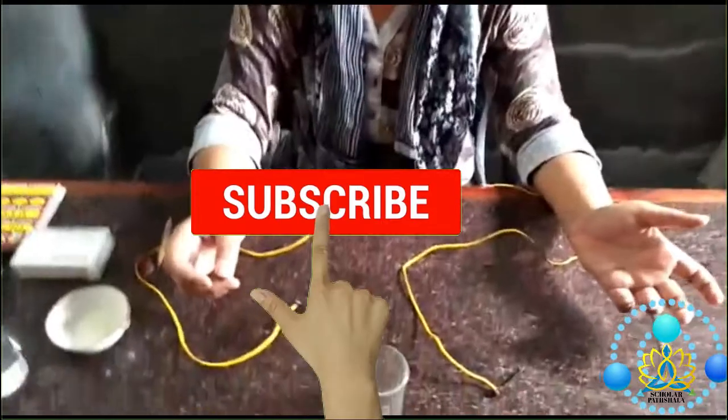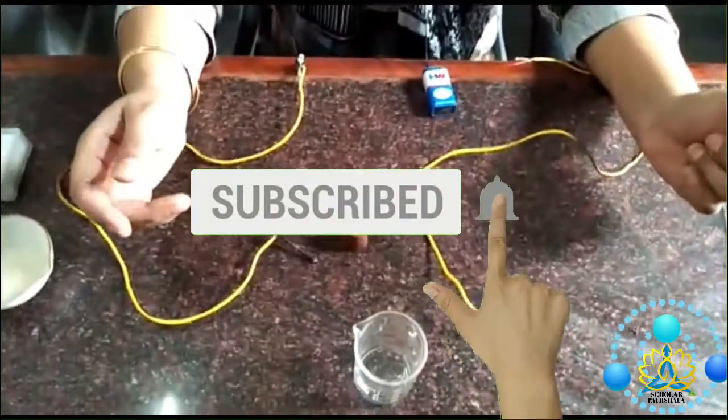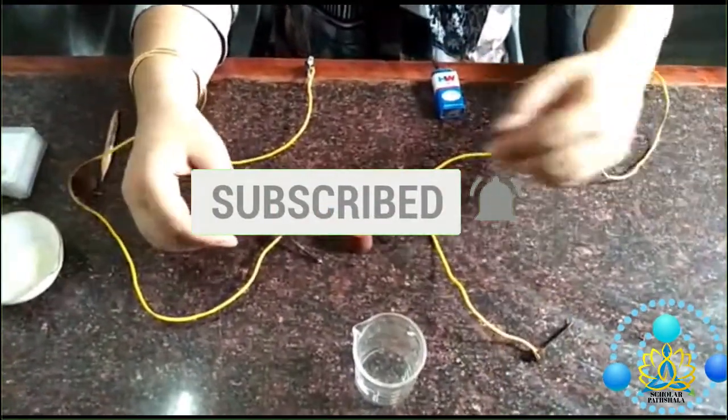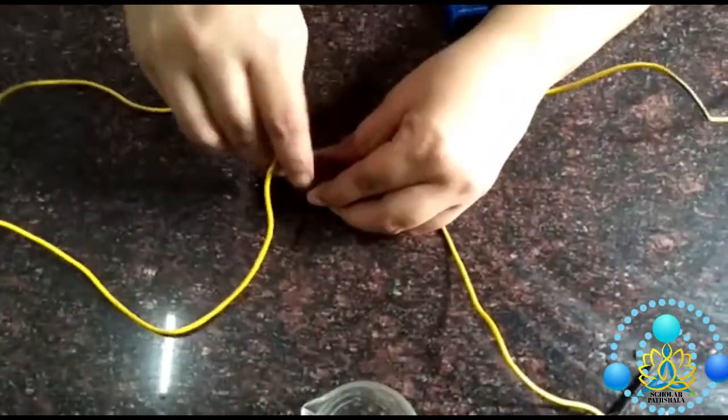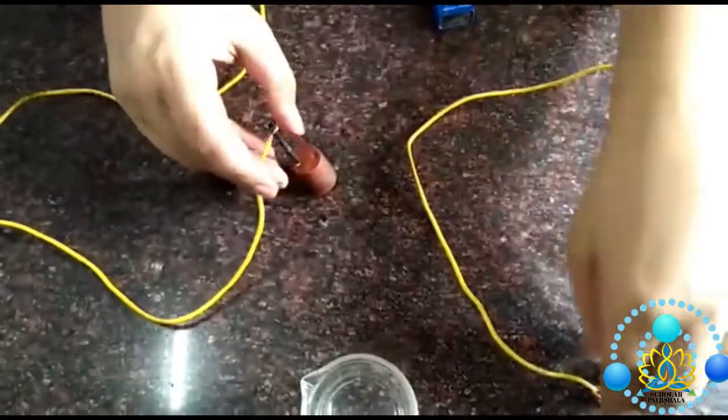Hello children, today we are going to do an experiment to show that acids can conduct electricity. For that I have a rubber cork. In that cork we will insert two iron nails like this.